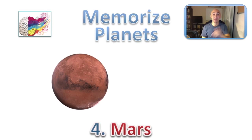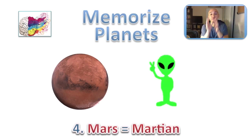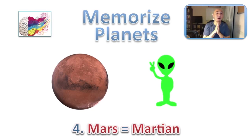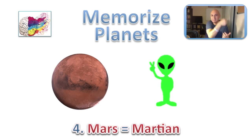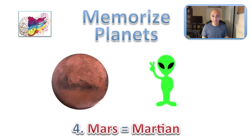The fourth planet is Mars. My picture for Mars is a Martian. Picture a Martian on your fourth location — maybe an alien out there zapping your fourth location. Close your eyes and imagine it doing all kinds of weird things to that location. Picture it very vividly.